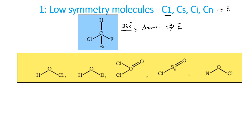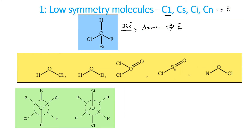Cs symmetry is like a horizontal symmetry — if a horizontal plane of symmetry is present, it is Cs symmetry. Ci means center of inversion: if you take the center and move front as well as back, and find the same element on both sides, the compound has center of inversion (I symmetry). Ci compounds have E and I symmetry operations, while Cs has E and σH.